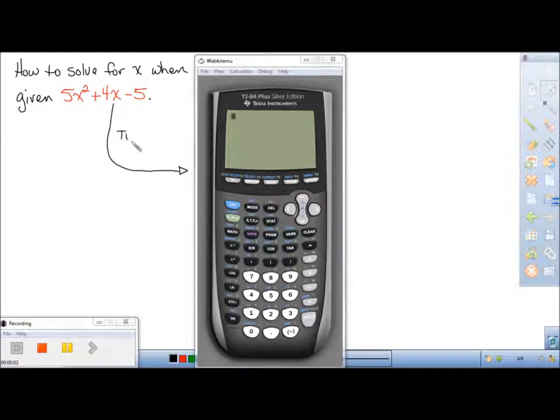So the first thing we want to do with our equation in quadratic form is type 5x² + 4x - 5 into the Y= menu of our calculator.